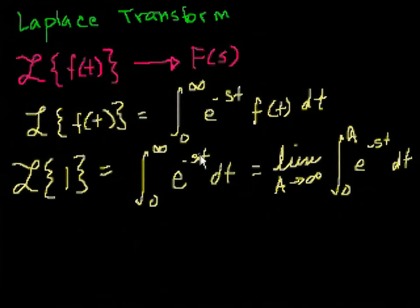So what's the antiderivative of e to the minus st with respect to dt? Well, it's equal to minus 1 over s e to the minus st. Right? If you don't believe me, take the derivative of this. You take minus s times that, that would all cancel out, and you'd just be left with e to the minus st.